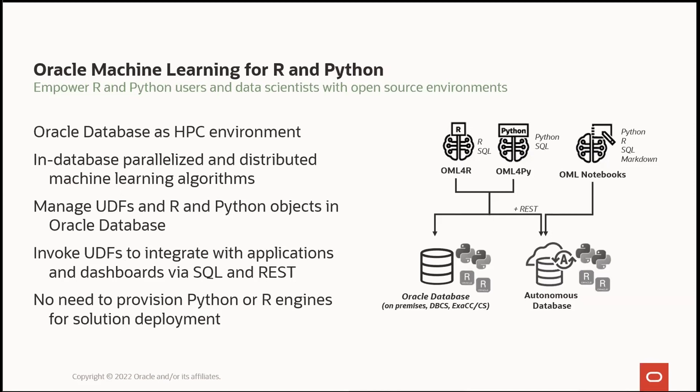Let's start with an overview of Oracle Machine Learning for R and Python before covering the script repository. With OML support for R and Python open source environments, Oracle Database serves as the HPC environment for invoking functions from the R and Python interfaces. OML supports parallelized and distributed processing of in-database machine learning algorithms exposed through natural R and Python interfaces, allowing users to store native R and Python objects in the database using the data store, and save user-defined functions or UDFs in the database script repository. Users can invoke UDFs from R, Python, SQL, and REST API to integrate results with applications and dashboards.